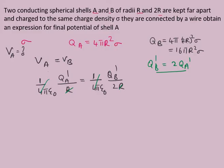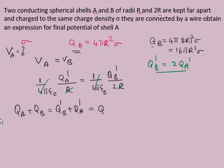We also know that the total charge is conserved. Before connecting, the total charge was QA + QB. After connecting, the total charge is QA' + QB'. Substituting QB' = 2QA', we get QA' + 2QA' = 3QA' = QA + QB. This is our second relation.